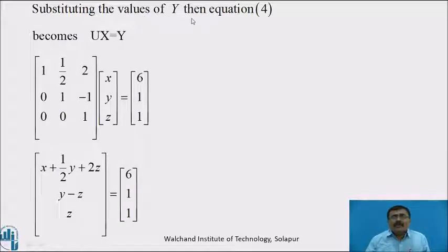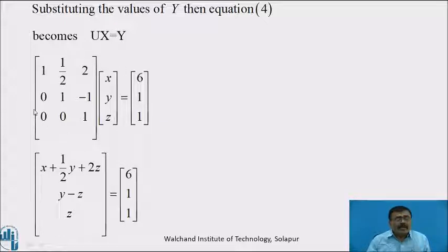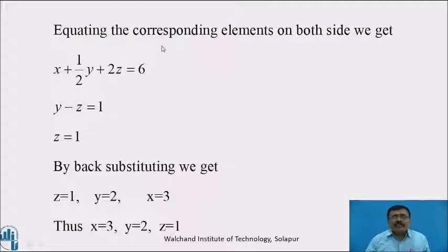Substituting the values of Y, equation 4 becomes UX = Y. U is the upper triangular matrix [[1, 1/2, 2], [0, 1, −1], [0, 0, 1]] times [X, Y, Z] equals [6, 1, 1]. Taking the product: X + (1/2)Y + 2Z = 6, Y − Z = 1, Z = 1. Equating corresponding elements and back substituting: Z = 1, Y = 2, X = 3.